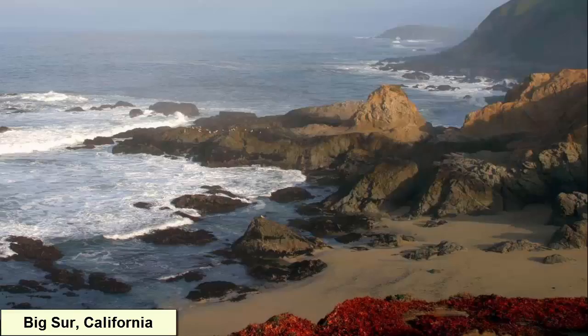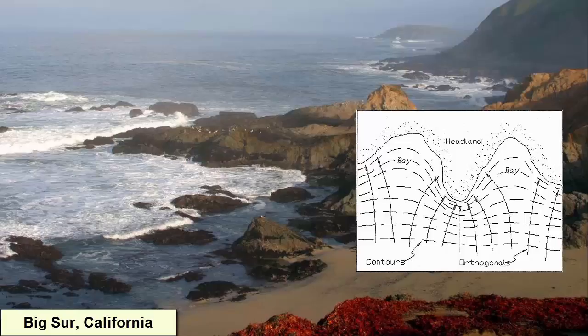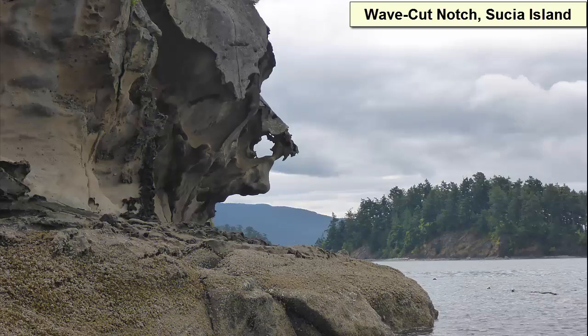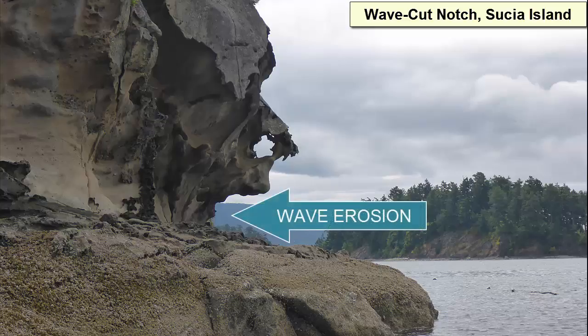When a coastline is made of solid rock lifting up out of the water, the waves will attack any bits that stick out. This focused wave energy will do its best to undercut the solid rock, creating wave-cut notches below wave-cut cliffs. Only by undercutting the cliffs will the ocean succeed in its erosional task, as gravity causes the unsupported rock to fail and fall into the ocean.